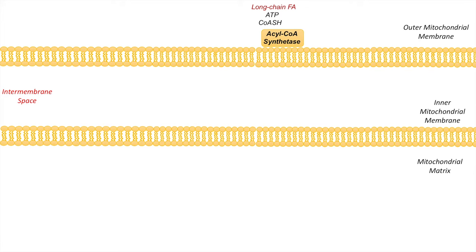It all starts with a long-chain fatty acid. Once we bring a long-chain fatty acid into the cytosol of a cell, it can be acted on by an enzyme known as acyl-CoA synthetase. This enzyme is located at the outer mitochondrial membrane, and it utilizes cofactors ATP and CoASH to add a coenzyme A group to the long-chain fatty acid, thereby activating the fatty acid.